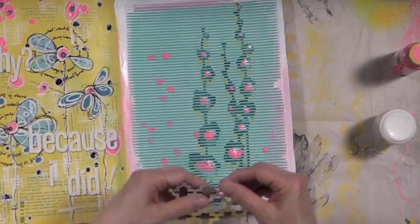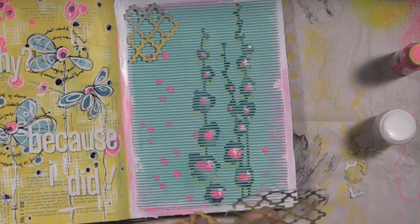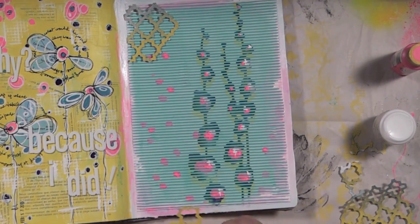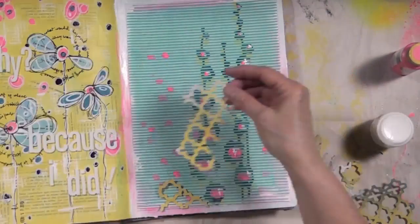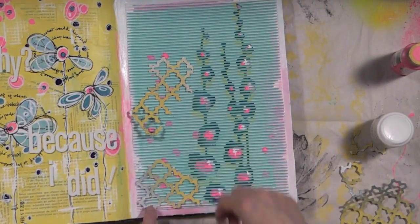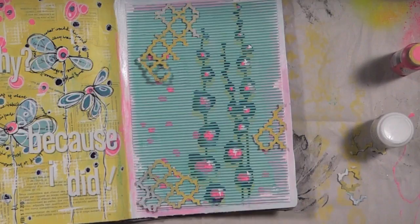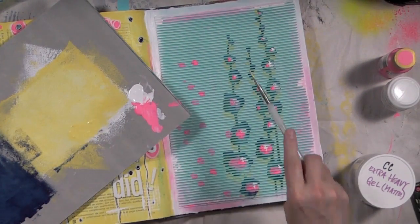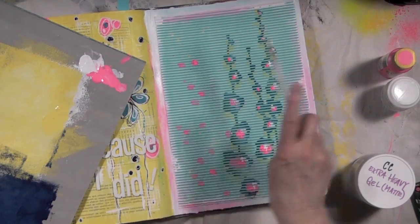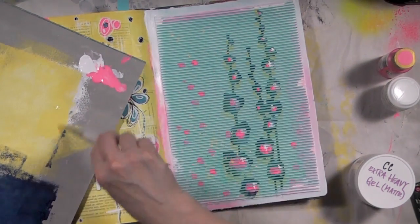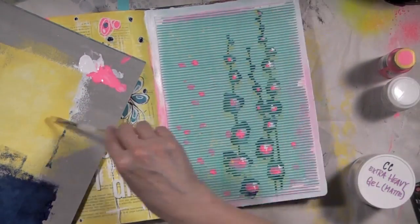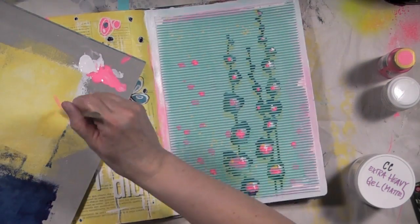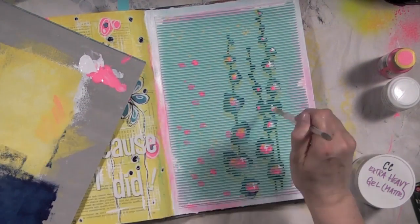Later on I'm going to add pieces of this trellis die cut, so I'm cutting it into smaller pieces and just playing around as to where I want those pieces, but I'm going to put them to the side for now. I need to add more dots to this background. I'm taking my yellow paint and diluting it with water quite a bit so that I can flick the paint on the background.